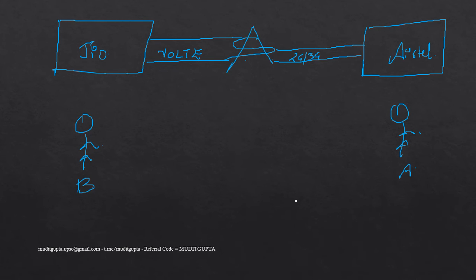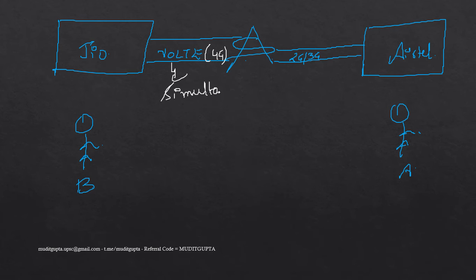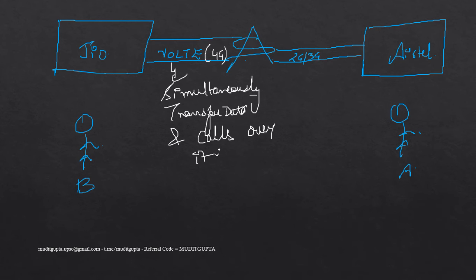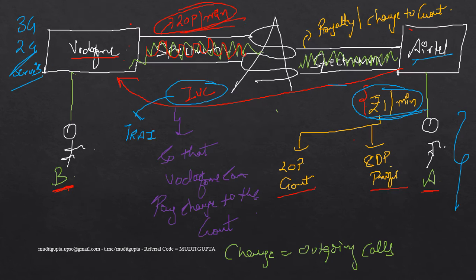Now let us understand the issue of Jio. Jio was using the VoLT spectrum — VoLTE spectrum — which is basically 4G spectrum, while Airtel was still using 2G and 3G spectrum. One beautiful aspect of VoLTE is that you can simultaneously transfer data and calls over it. If you are making a phone call from a 3G network, the data quality will reduce — your internet drops from 3G to 2G.